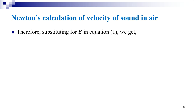Therefore, substituting E = P into equation V = √(E/ρ), we get V = √(P/ρ). This equation is known as Newton's formula for the velocity of sound in air.